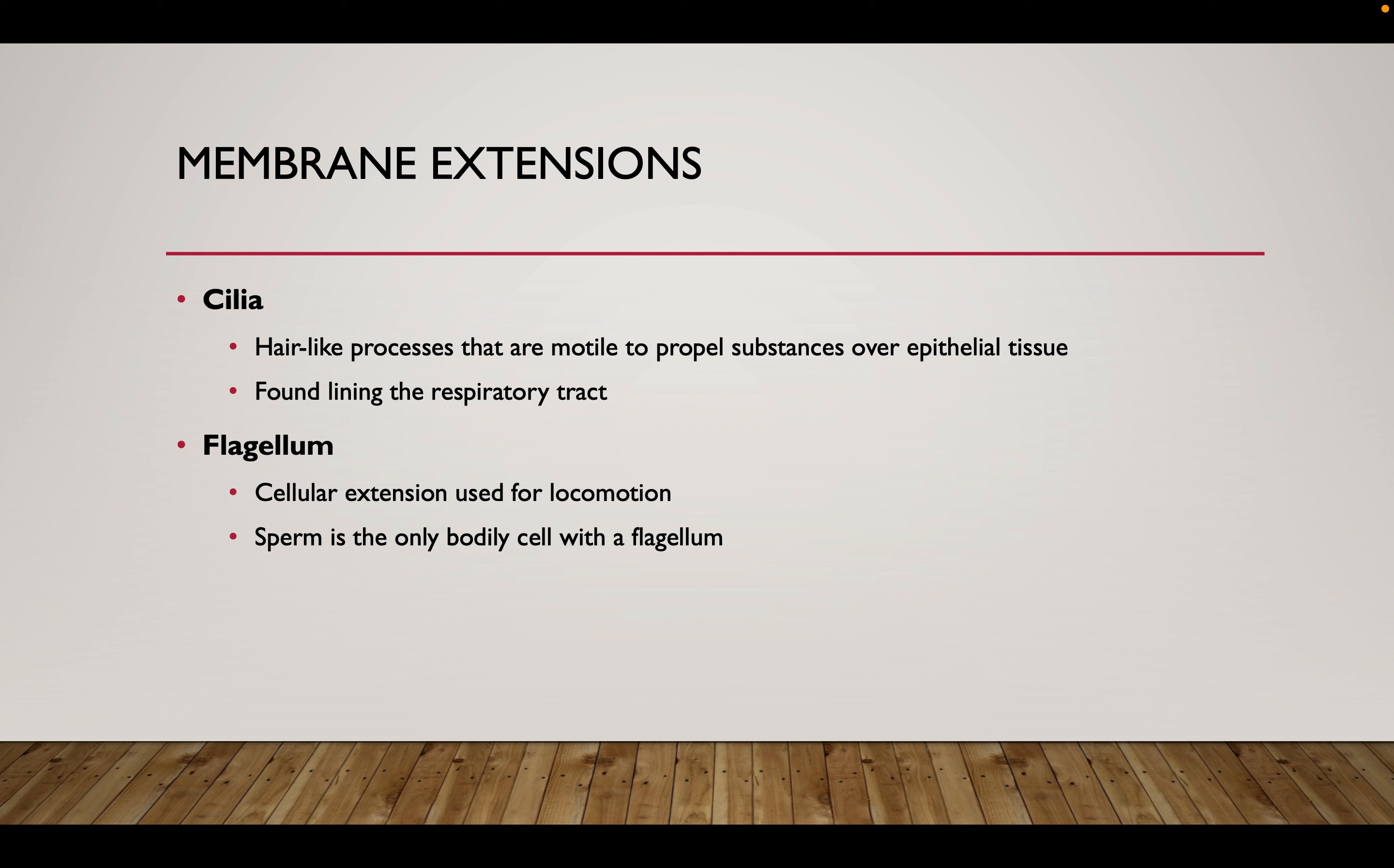Cilia are these small wavy hair-like processes that exist on the apical surface of a cell that line the lumen, and they serve to generally propel and move different substances across the surface. We see this in the respiratory tract, sometimes referred to as the mucociliary escalator, and the cilia are moving mucus and different products up, out of the respiratory tract to the pharynx.